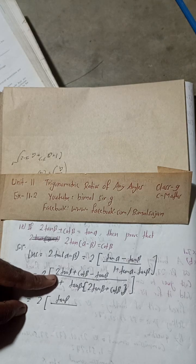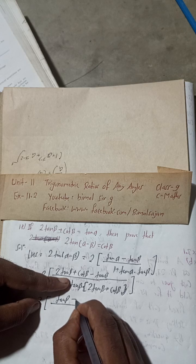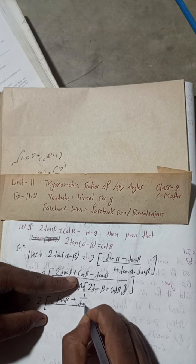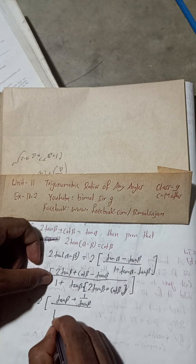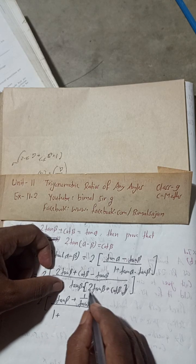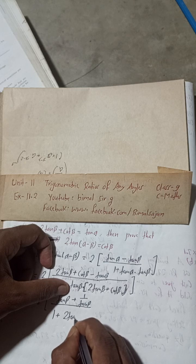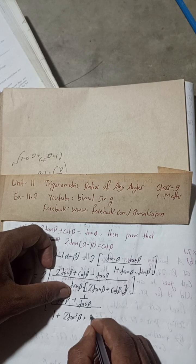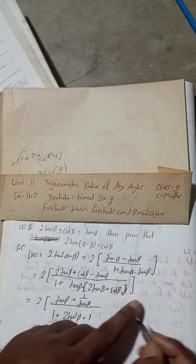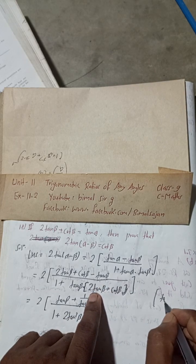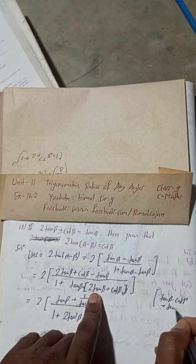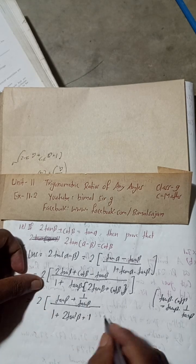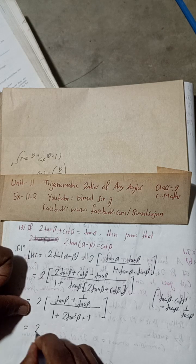We now write cot β as 1/tan β. Expanding the denominator: 1 + 2·tan²β + tan β·cot β. Since tan β × cot β = tan β × (1/tan β) = 1, the denominator becomes 1 + 2·tan²β + 1, which equals 2 + 2·tan²β.